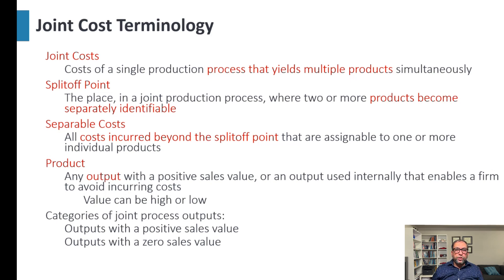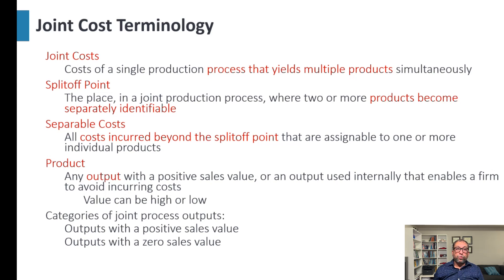The split-off point is the place in a joint production process where two or more products become separately identifiable. Separable cost is the cost incurred after the split-off point — all costs incurred beyond that point that are assignable to one or more individual products.